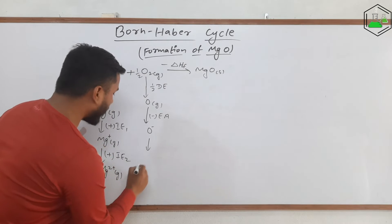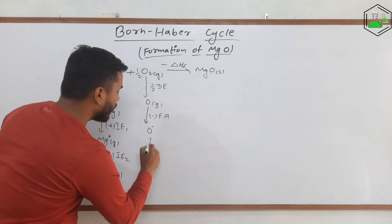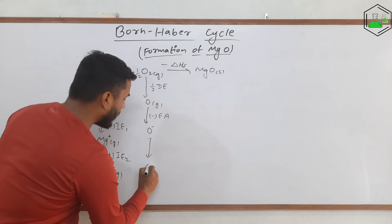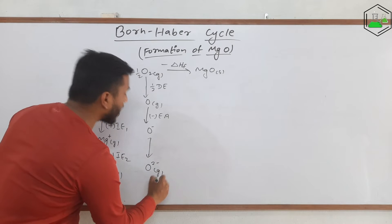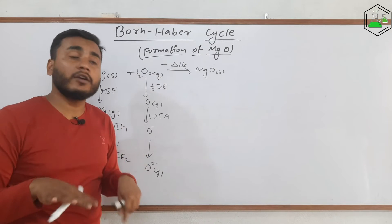But what is the valency of oxygen? Yes, you are thinking correct. The valency of oxygen is 2, that means it will have O2- form in the last. And to convert O- into O2- it needs to gain one more electron.